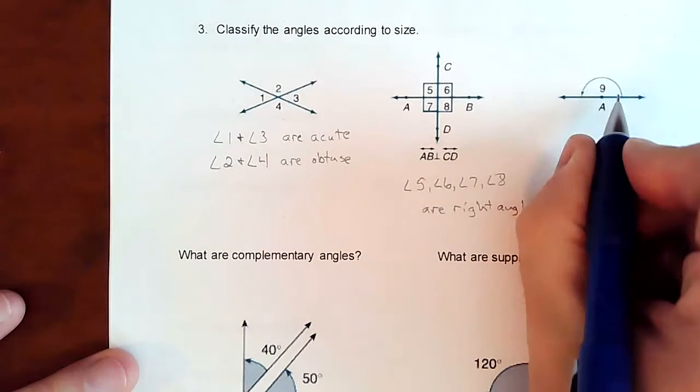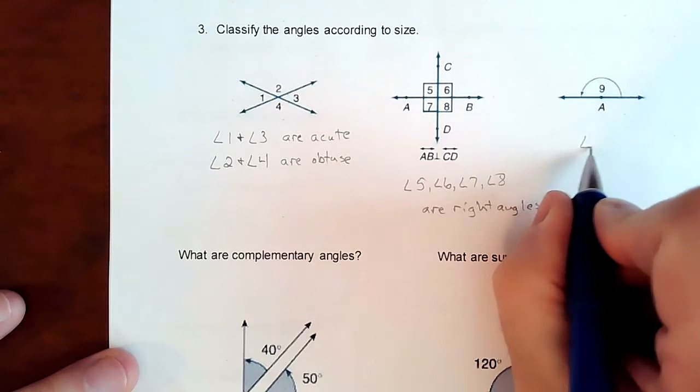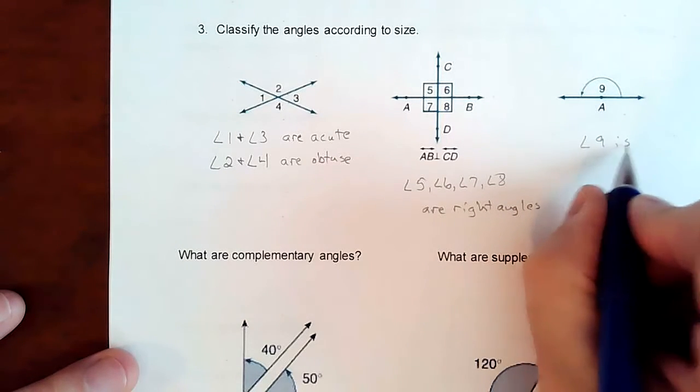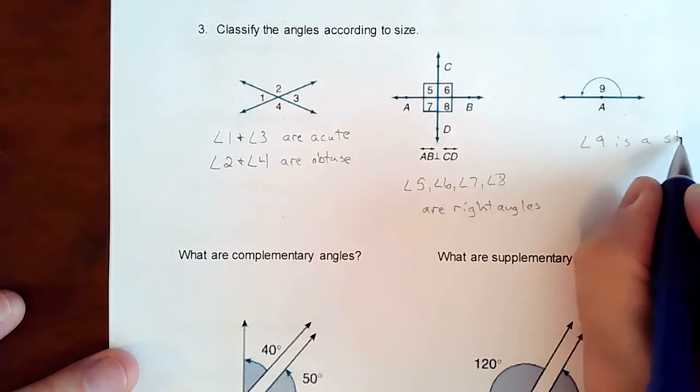And then for number nine, it makes a straight line. So angle nine is a straight angle.